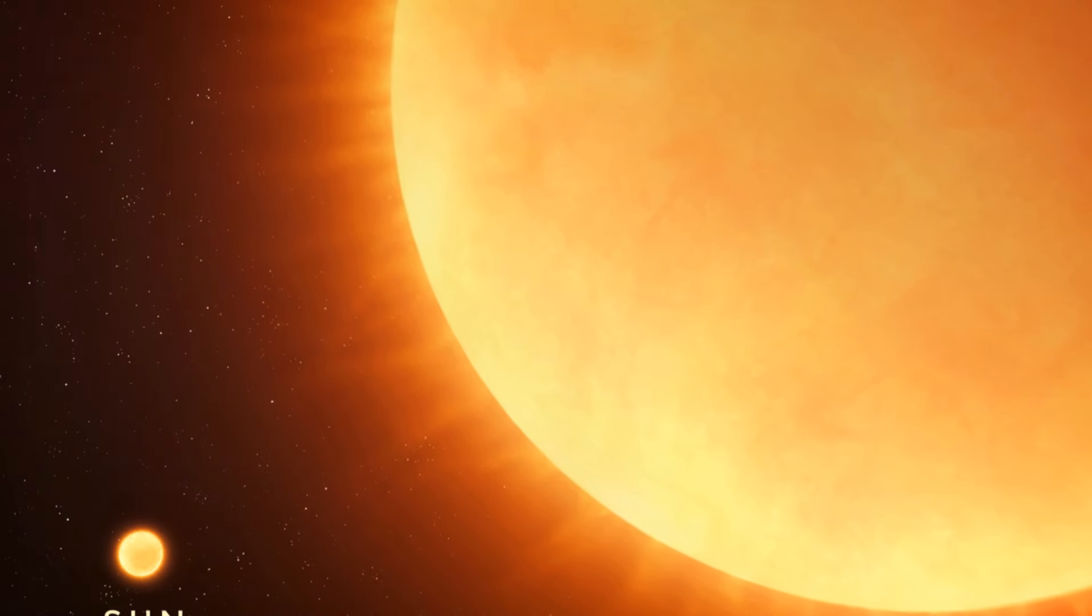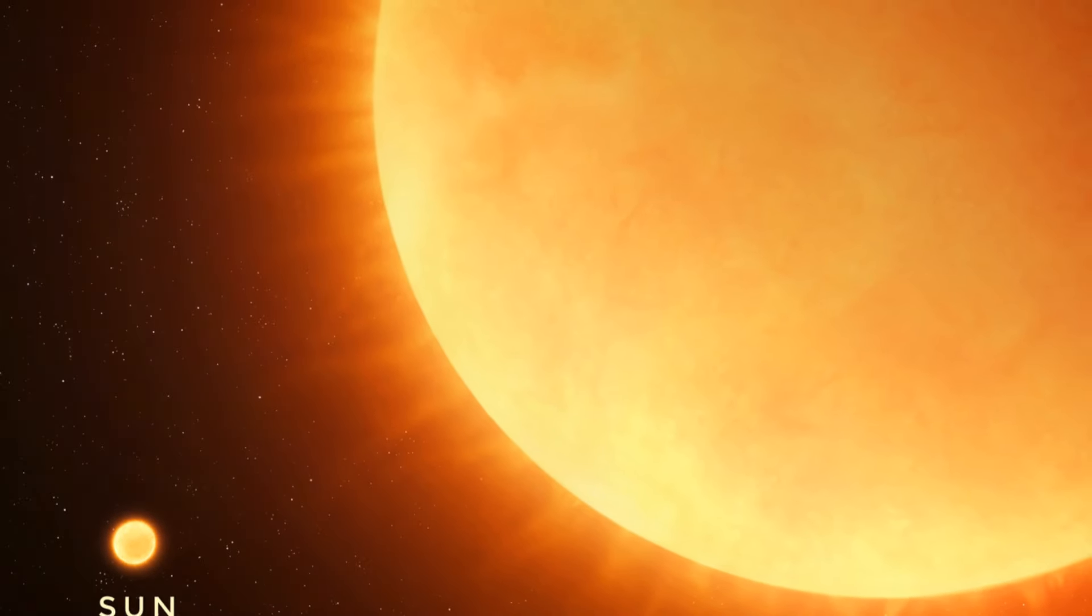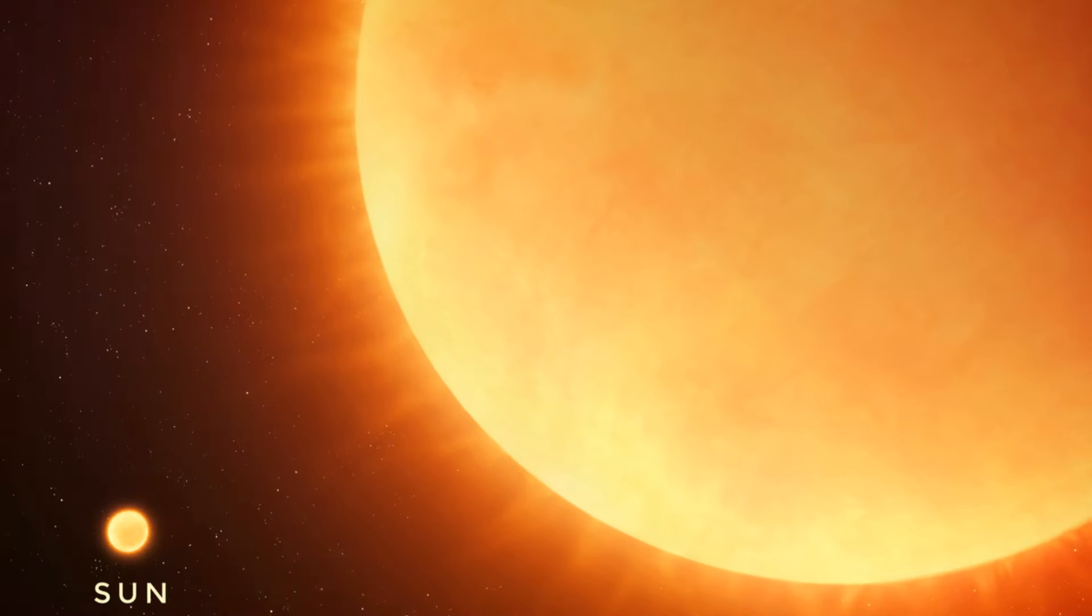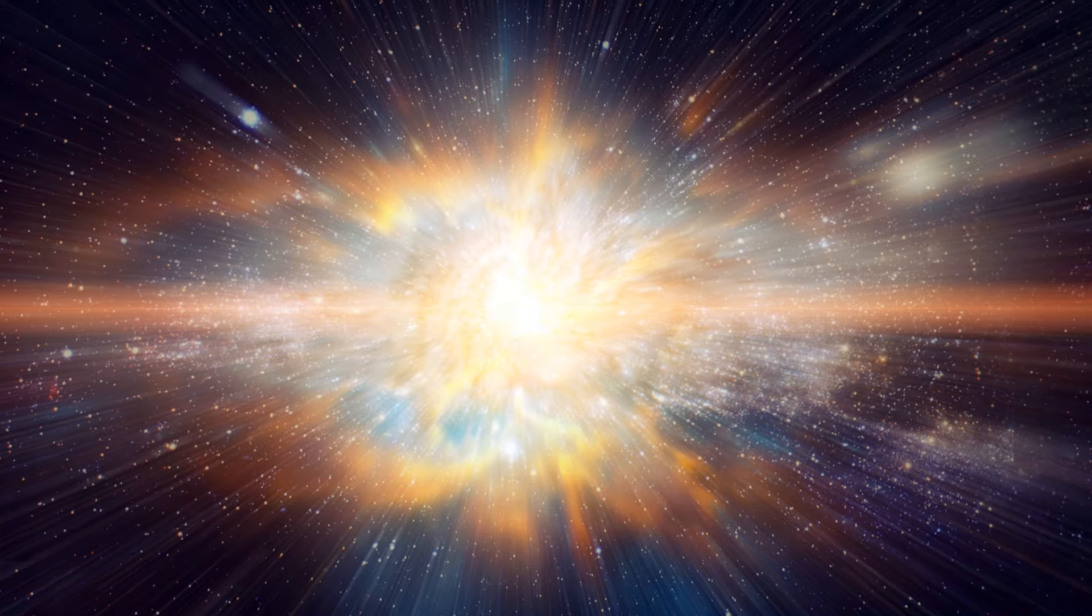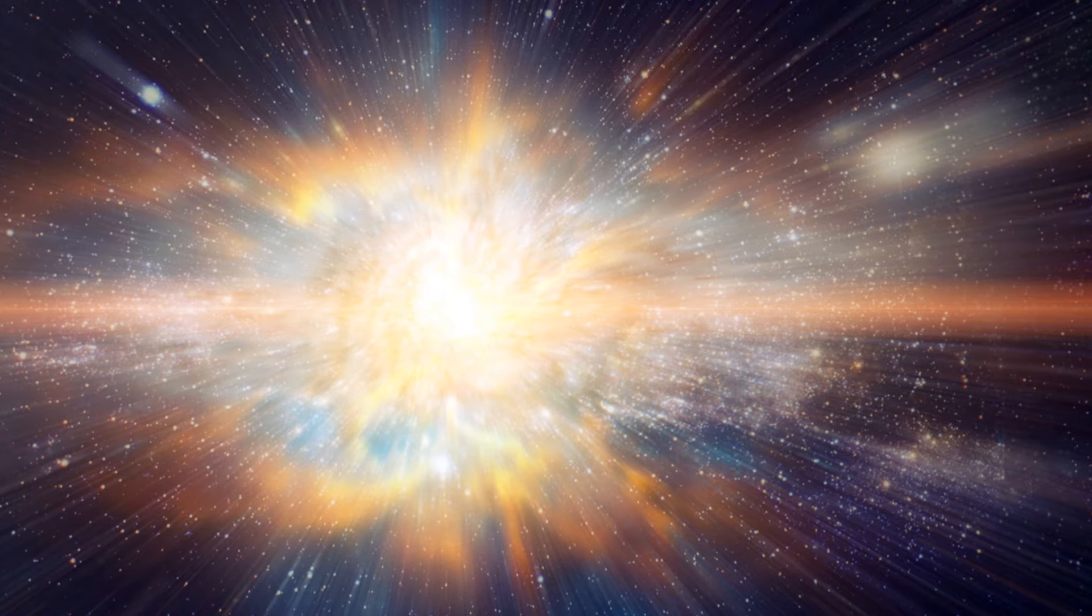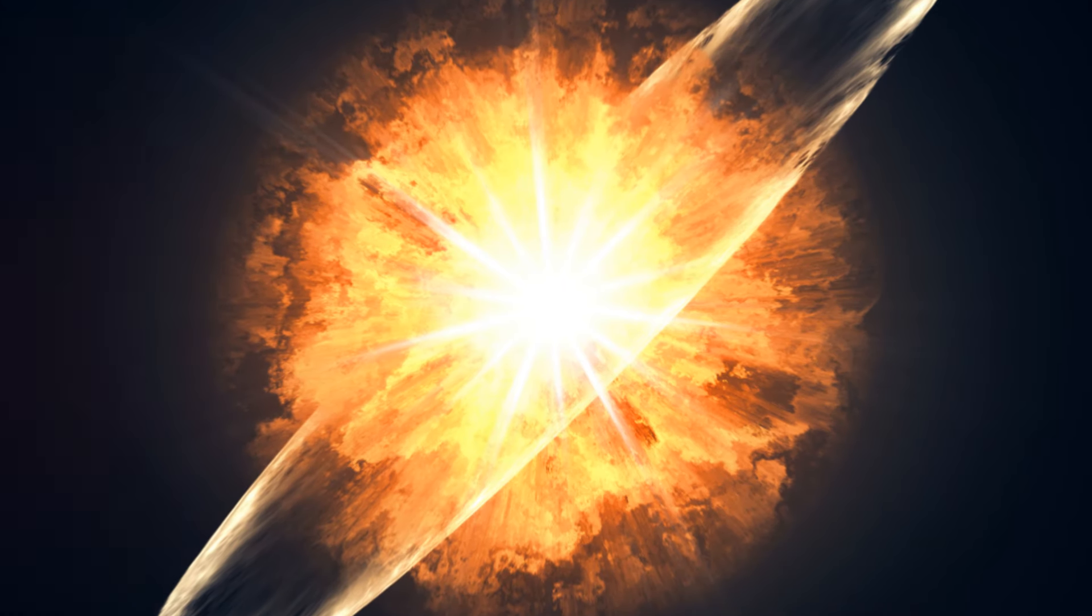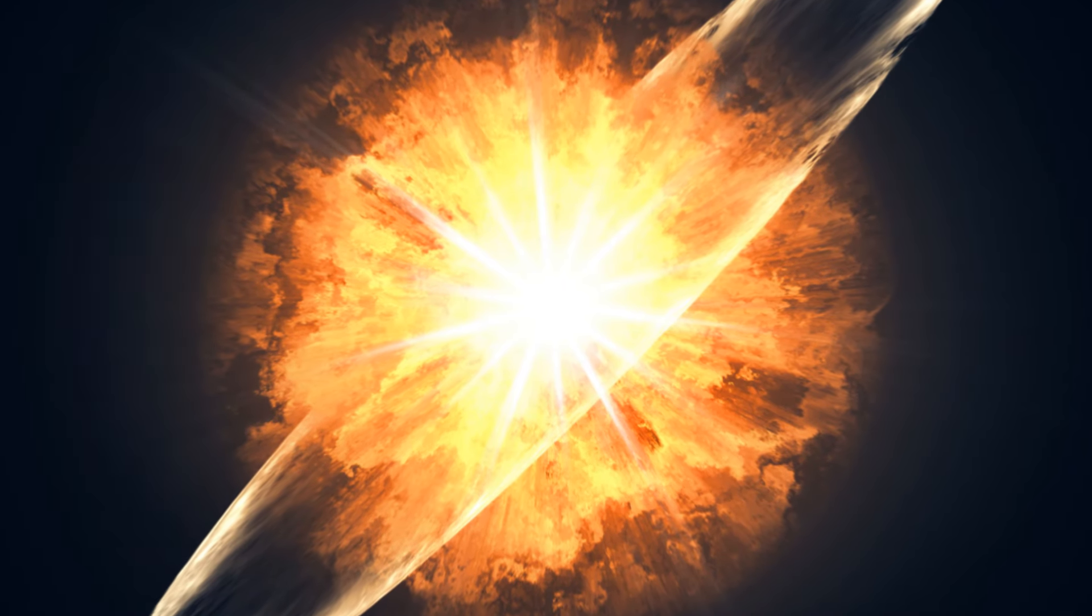While Betelgeuse is nearing the end, predicting the exact timing of the supernova is incredibly difficult. Astronomers estimate that it could go supernova any time within the next 100,000 years. This could mean it happens tomorrow, or it could be tens of thousands of years from now.